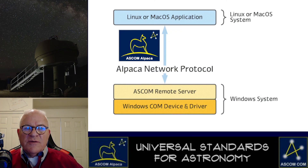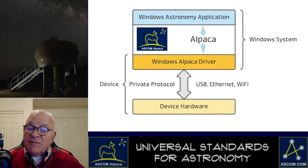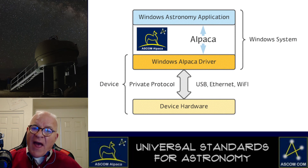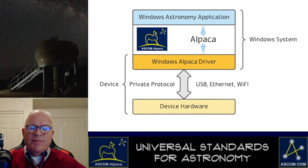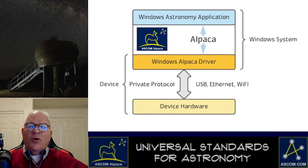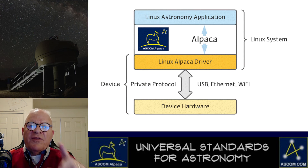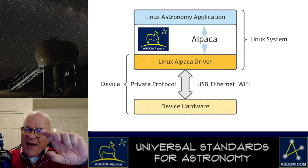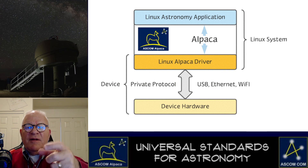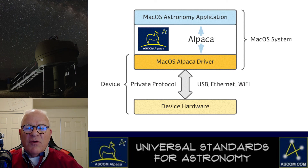Let's look at one more Windows-involved possibility: a Windows app that speaks Alpaca natively with an Alpaca driver running on the Windows system. This is the same layering as the original COM one we looked at first, only instead of using COM for the communication, it uses Alpaca. We see the same thing with a Linux app running on a Linux machine with a Linux Alpaca driver, using Alpaca to communicate between the app and the driver. This is the same whether Windows, Linux, or Mac. Because Alpaca is cross-platform, it is truly universal — even across operating systems.